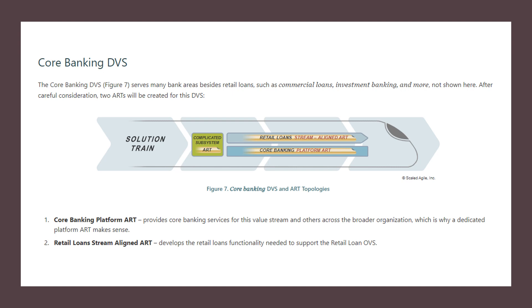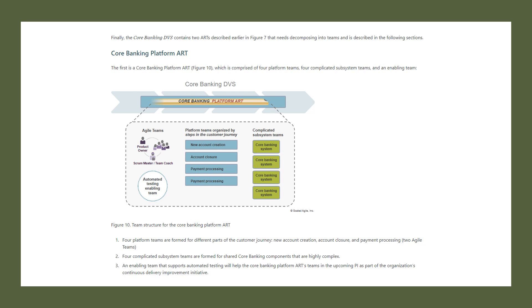The first ART is the core banking platform ART, which provides core banking services for this value stream. It can provide a number of APIs and common functionalities which retail loans, commercial loans, and investment banking can utilize. It makes large sense to have a dedicated platform ART. The second is the retail loans stream-aligned ART, which develops retail loans functionality needed to support the retail loan operational value stream.